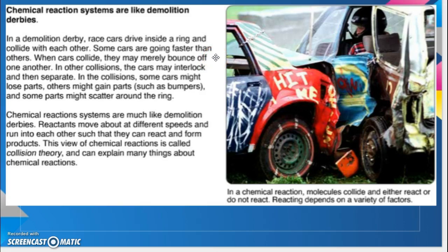All those things can happen with chemicals too. If they don't react, they just bounce off each other. Sometimes they interlock and then separate, making a chemical reaction. Or they could lose parts — like in a double displacement or single replacement reaction where they switch partners. Some scatter around the ring like a decomposition reaction, where one chemical splits apart into many. Chemical reaction systems are much like demolition derbies: molecules move about at different speeds and run into each other to react and form products. This view is called collision theory.